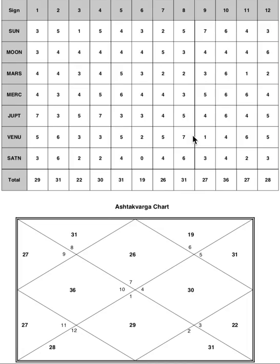Now that you know the defining axis of the person's life, you can look at transits and know which ones will trigger what kind of events. Currently Jupiter is transiting his second house — the sign Scorpio — until the 5th of November 2019. His Venus, the lagna lord, has immense contribution to Scorpio, which means this transit of Jupiter will have a very, very prominent say in his life.